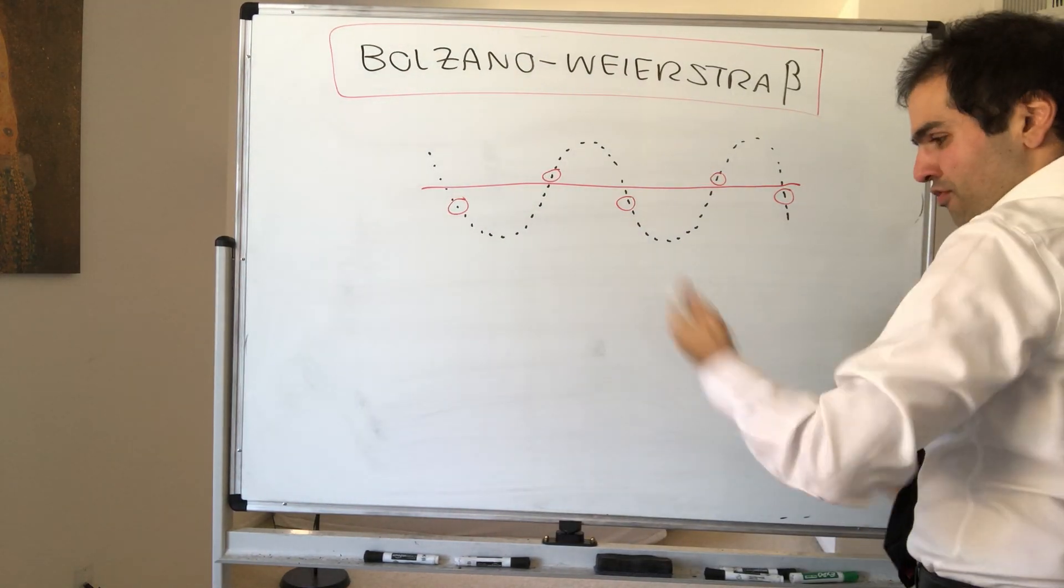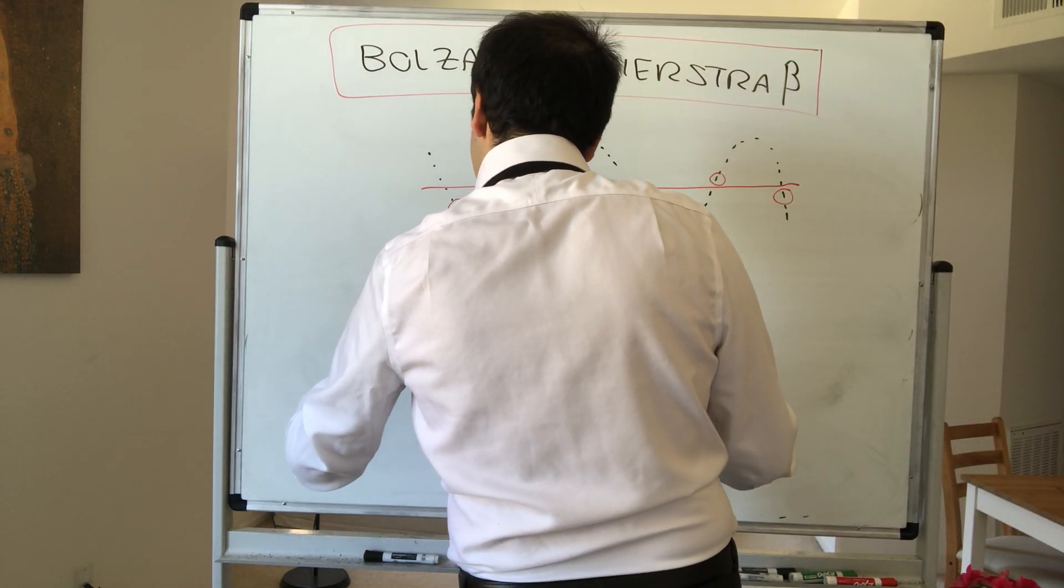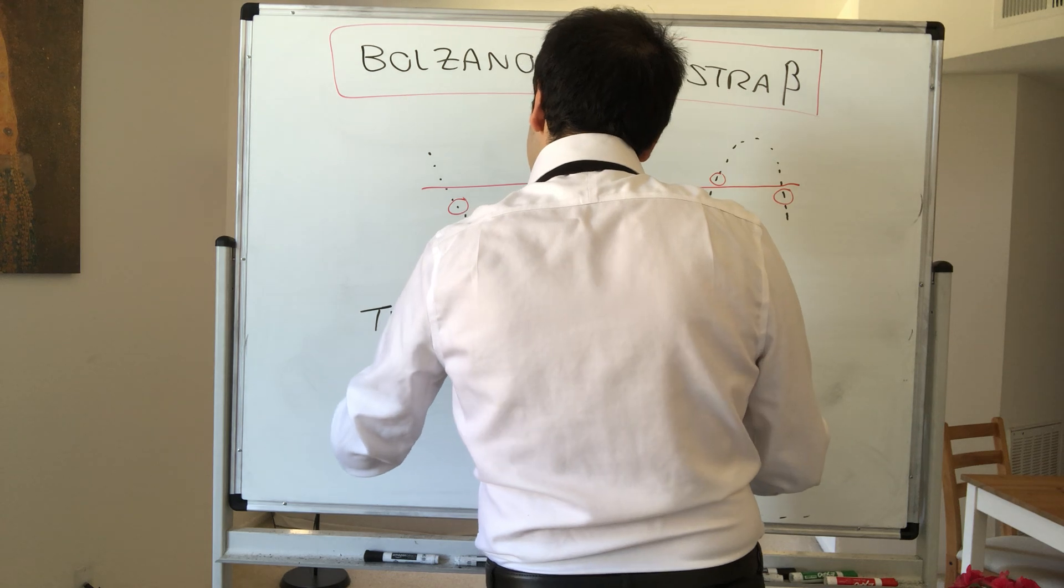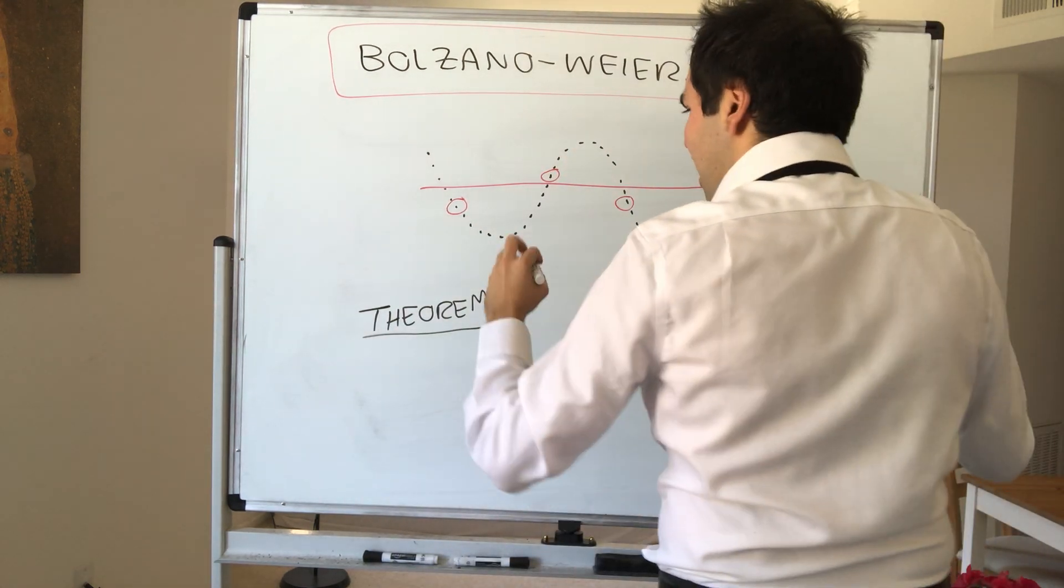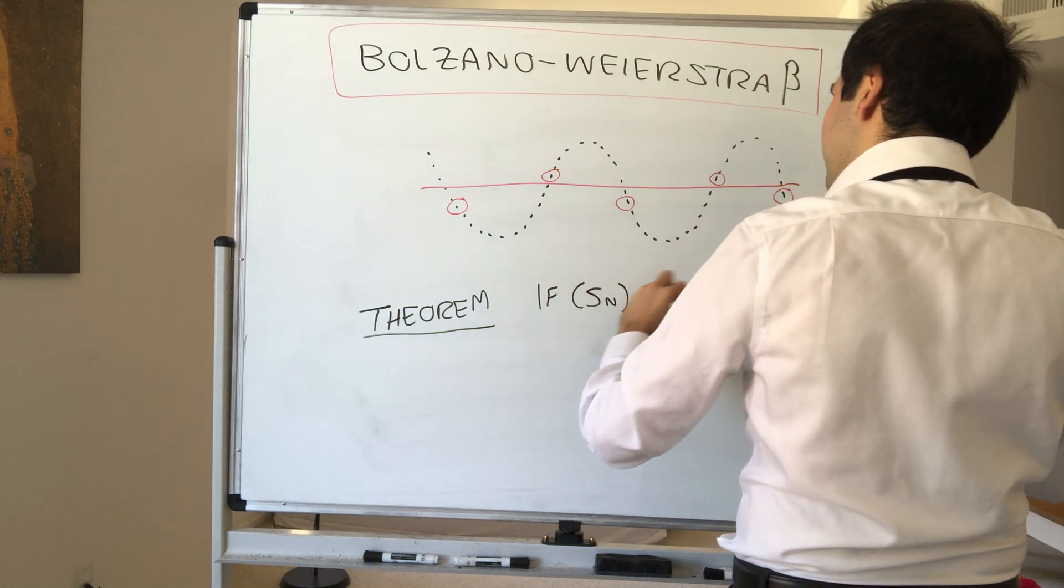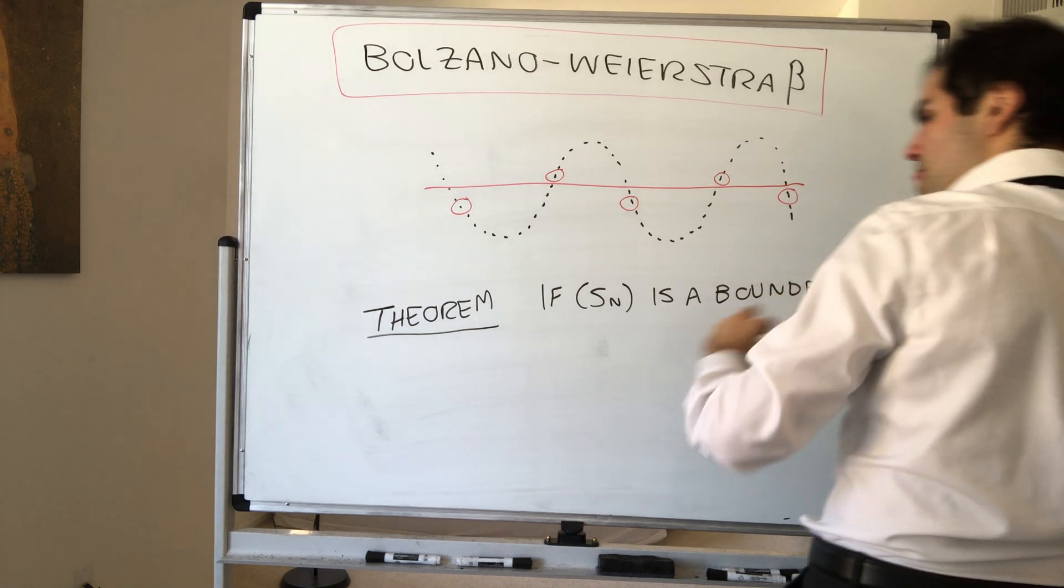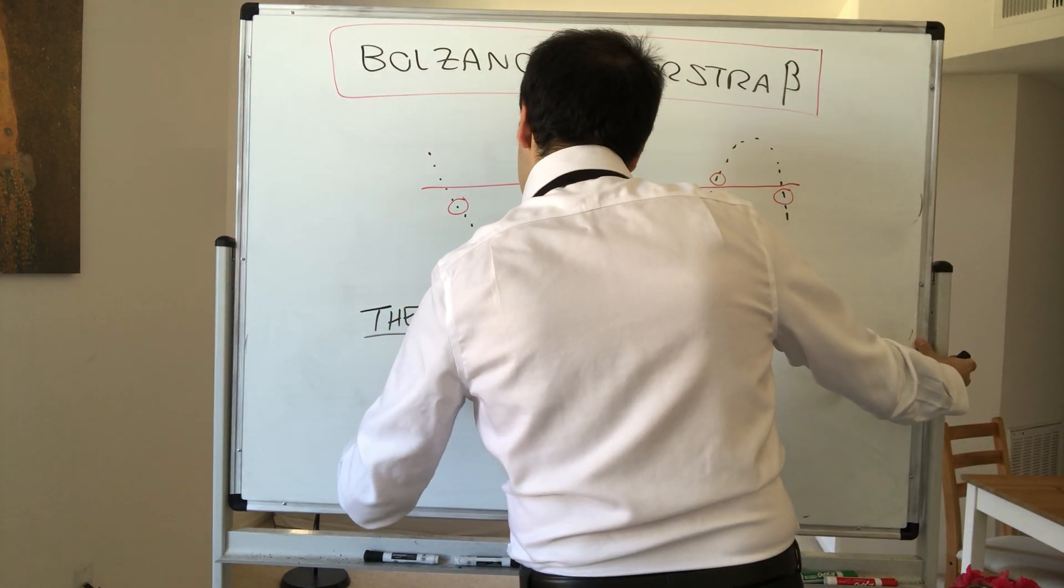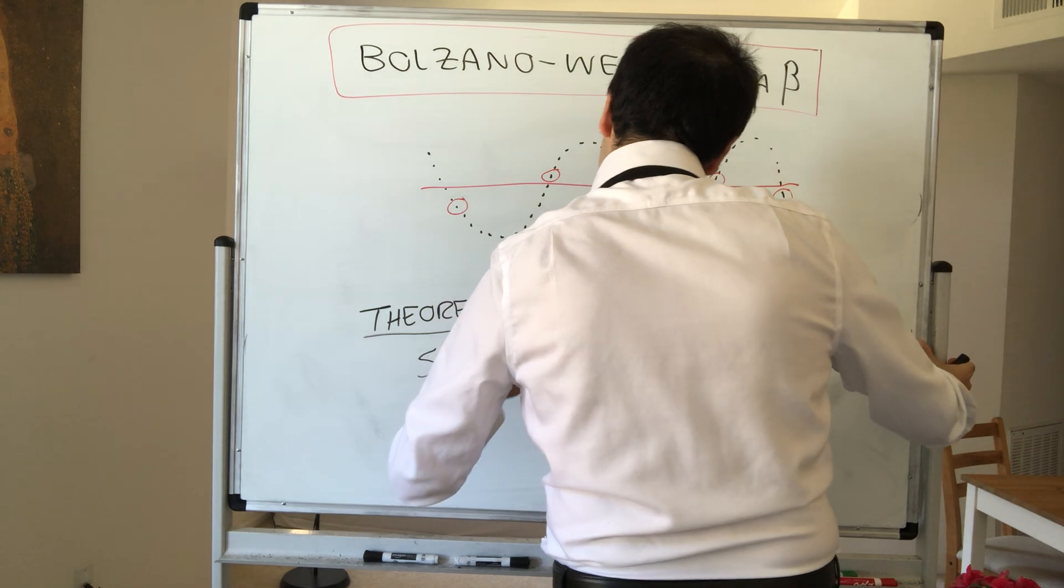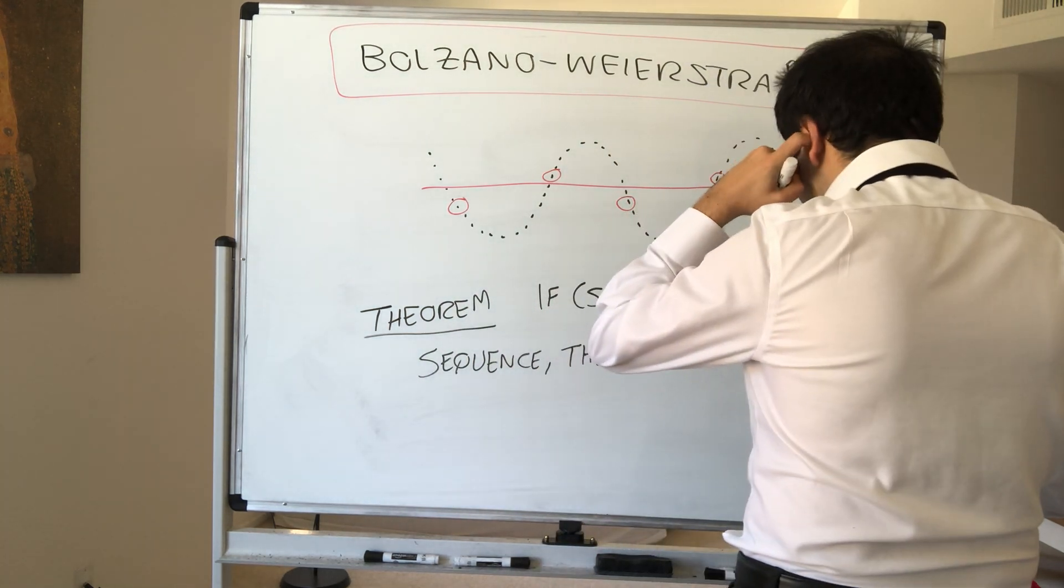And without further ado, here's the theorem, and the beauty is in its simplicity: namely, if Sn is a bounded sequence, then Sn must have a convergent subsequence.